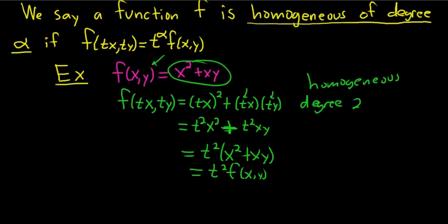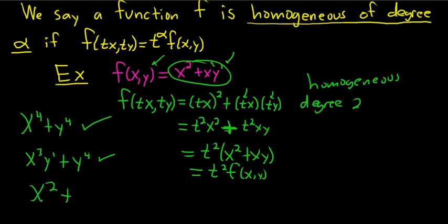So generally, it's pretty easy to tell if something is homogeneous. For example, this would be homogeneous of degree 4, because there's a 4 here. This would also be homogeneous of degree 4. You could basically add the exponents, even though the variables are different. So 3 plus 1 is 4. Same thing here, 1 plus 1 is 2. This here would not be homogeneous, because there's a 1 here and there's a 2 there.